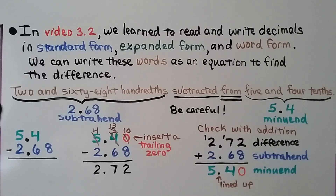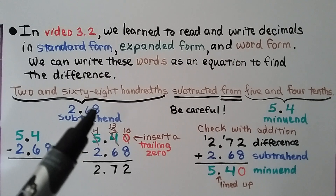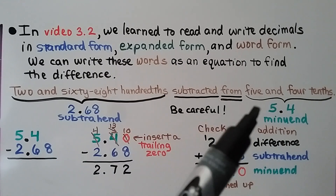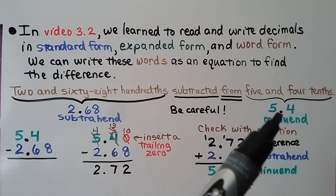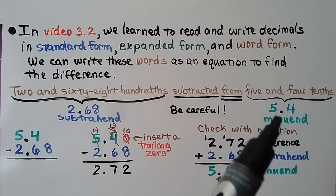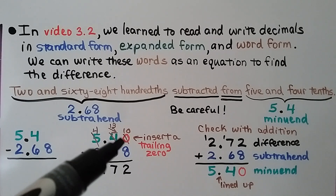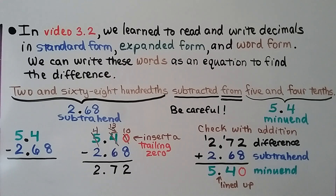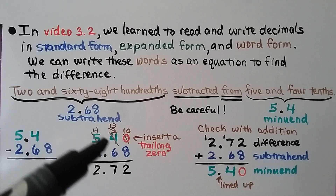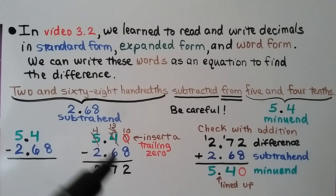This is going to be very tricky because of the wording. We have 2 — that's 2 whole, and that's our decimal point — 68 hundredths. And it's subtracted from 5 and 4 tenths: we have 5 whole, and is our decimal point, and 4 tenths. This is being subtracted from this, which means the first is the subtrahend and the second is the minuend. So the 5 and 4 tenths is going to be on top. We insert a trailing zero, do our subtraction just as we would with whole numbers, and we get 2 and 72 hundredths. We can check with addition: we use our difference and our subtrahend, add them together, and if they equal the minuend, we know we did it correctly.